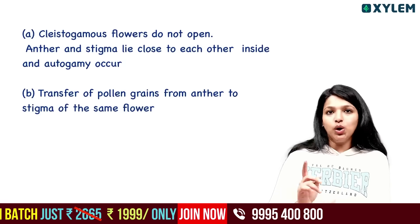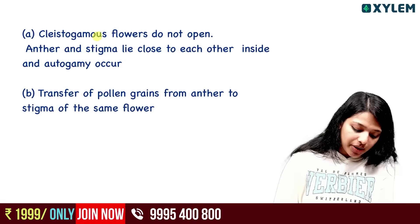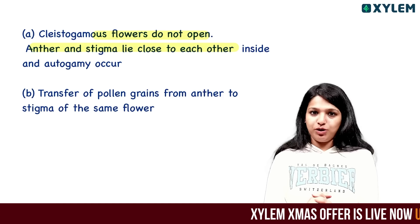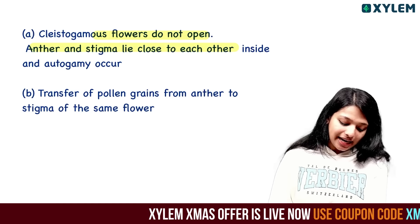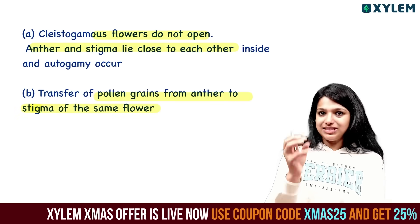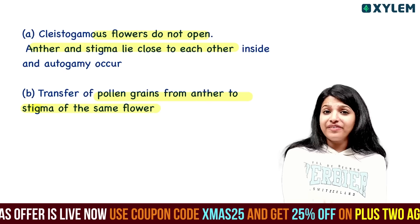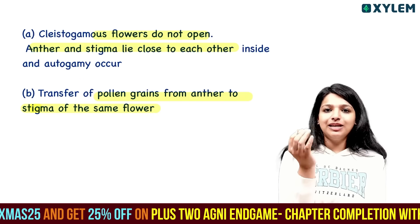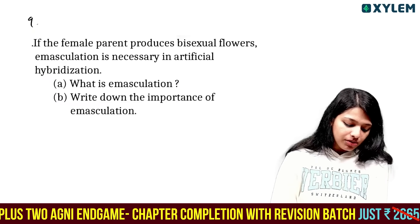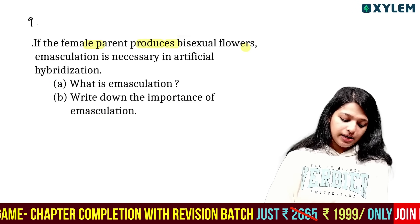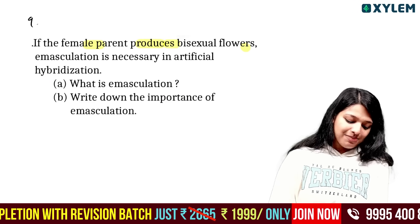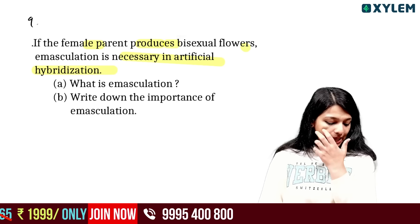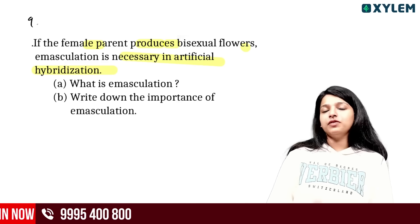Flowers are classified into chasmogamous and cleistogamous. Cleistogamous flowers are defined by autogamy - they do not open. Anther and stigma lie close to each other, so autogamy always occurs inside the flower, and only self-pollination happens with pollen grains landing on the stigma of the same flower. In female parent producing bisexual flowers, emasculation is necessary in artificial hybridization. What is emasculation? Write down the importance of emasculation. Emasculation is the removal of anthers from a bisexual flower bud before the anther dehisces.